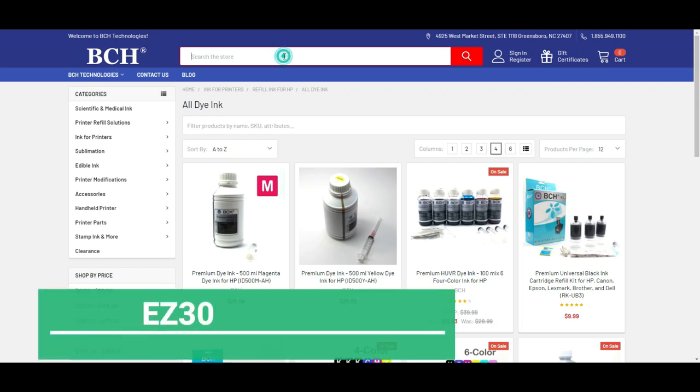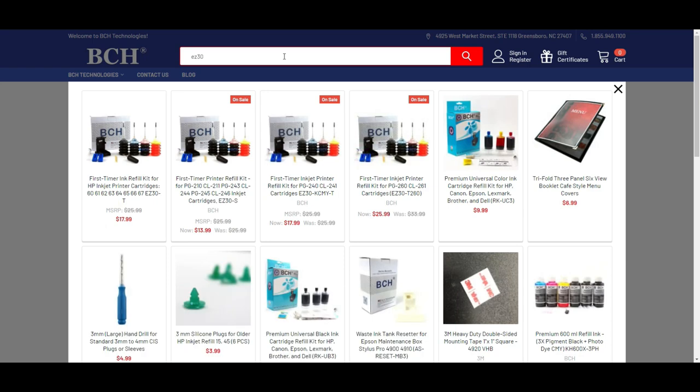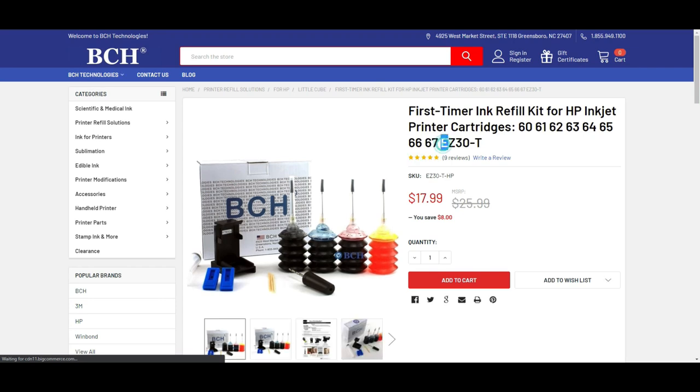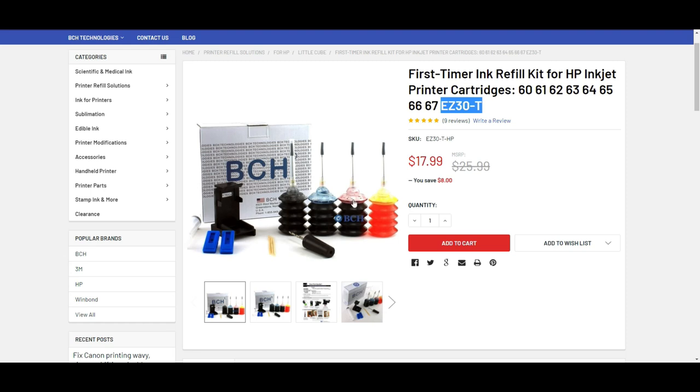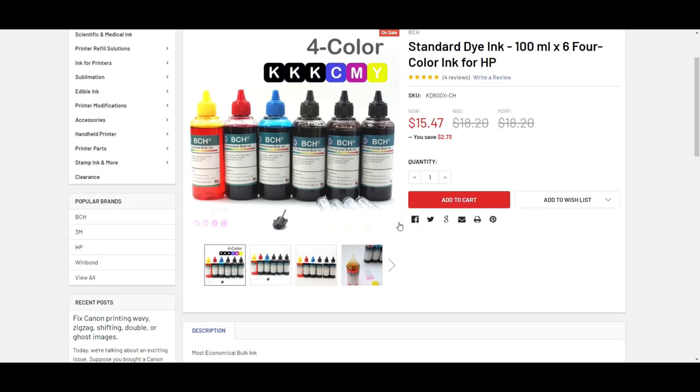For starters, you can just search for EZ30 and go to this one. First time my refill kit for HP and it's called EZ30T. This one you can have all four colors and you have a full priming kit. The ink volume is 30 ml each color. The ink I recommend earlier, this ink doesn't have a priming kit. It only has ink, but you get lots of ink. You get 100 ml each for six bottles.